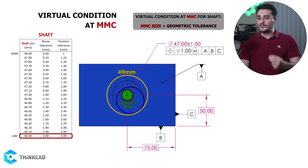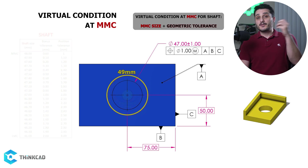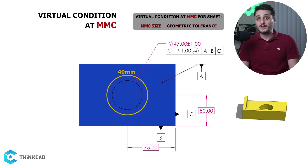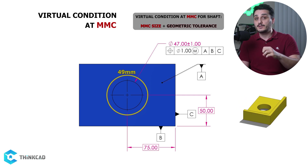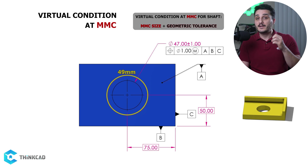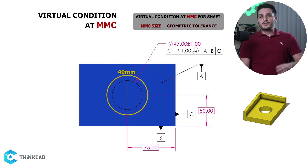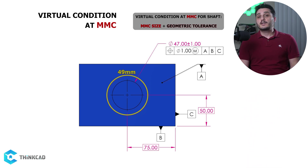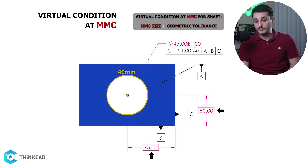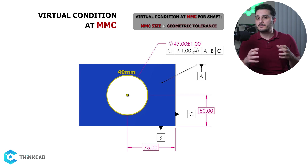Now why is this so important? If your other part has its hole exactly at its true position with its size at virtual condition of 49 millimeters, you will always have a fit no matter what. Virtual condition here is basically telling us how large it must be to ensure you always have a fit.